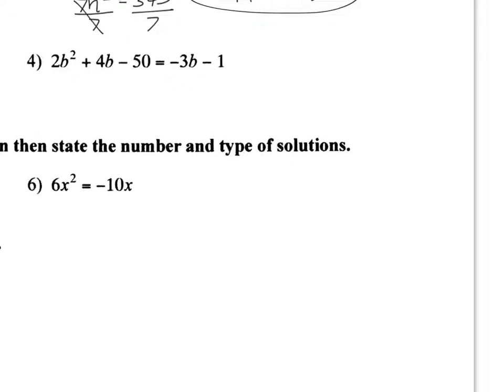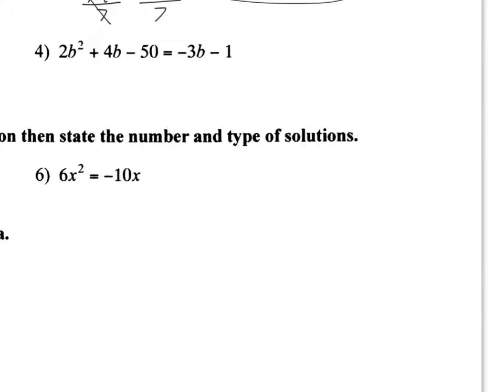But sometimes we actually have to factor it. Now, here's a case where we need to factor. The problem is, it's not all set equal to 0, so I've got to get my like terms together. So here I'm going to add 3b to both sides, and I'm going to add 1. Now, remember, it's not just about getting it equal to 0, but you also want to have it in standard form. Remember, standard form is ax squared plus bx plus c equals 0. So if I do that here, combine my like terms, I'm going to have 2b squared plus 7b minus 49 equals 0.